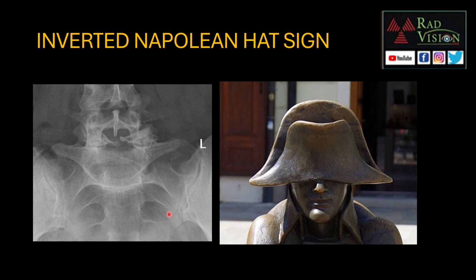The inverted Napoleon hat sign is seen in cases of spondylolisthesis of the L5 vertebral body over S1. This AP view shows spondylolisthesis of L5 over S1, demonstrating the inverted Napoleon hat sign.